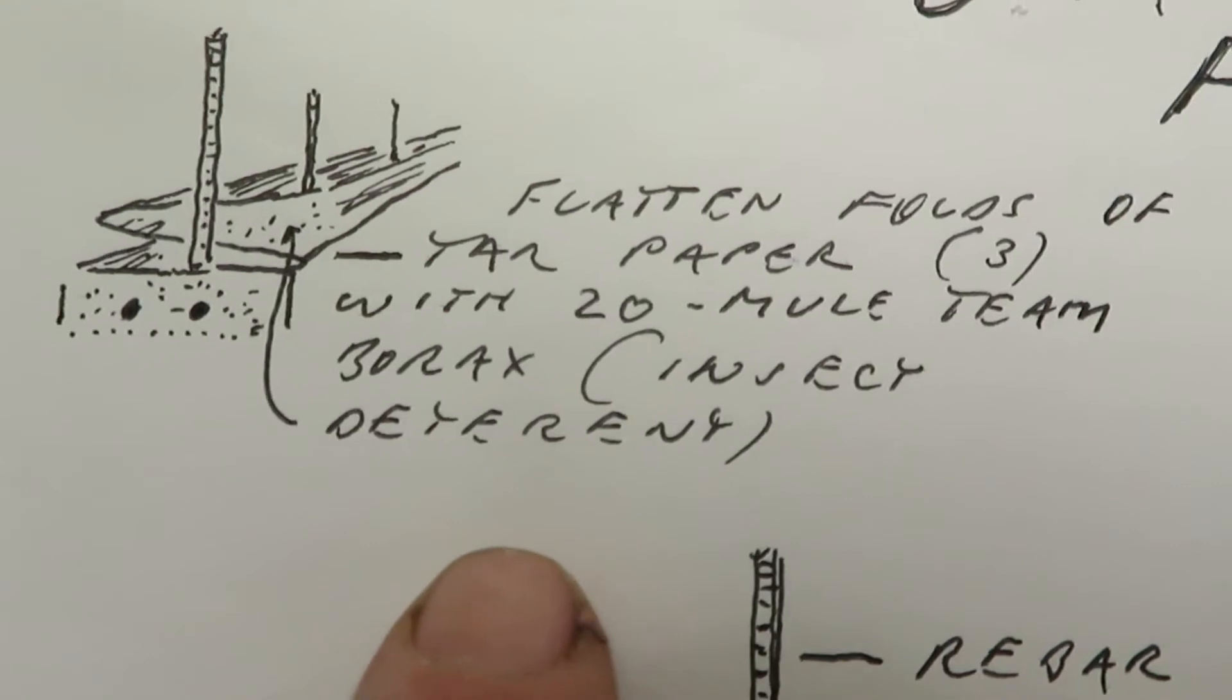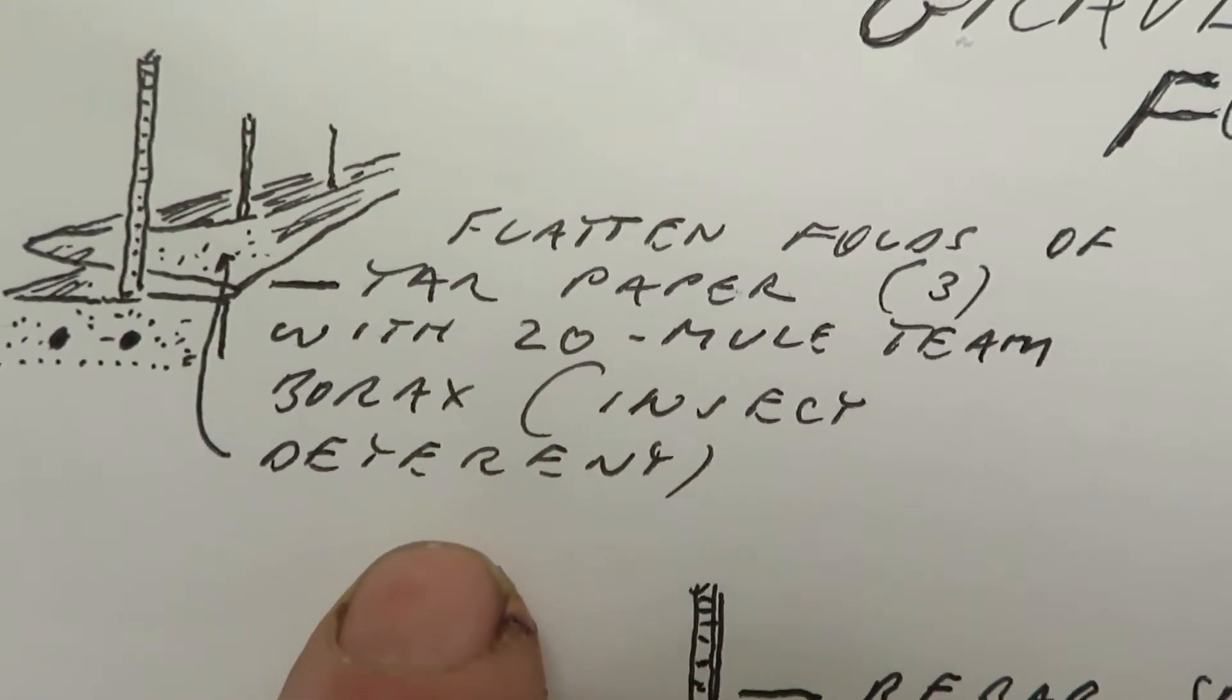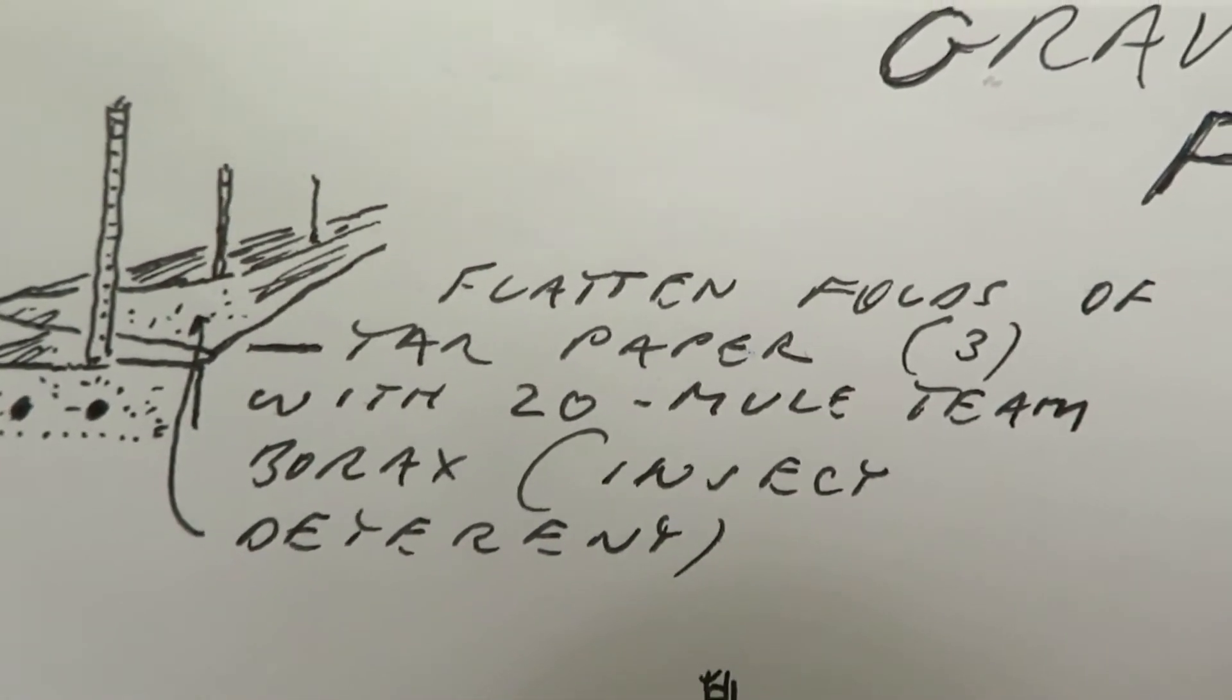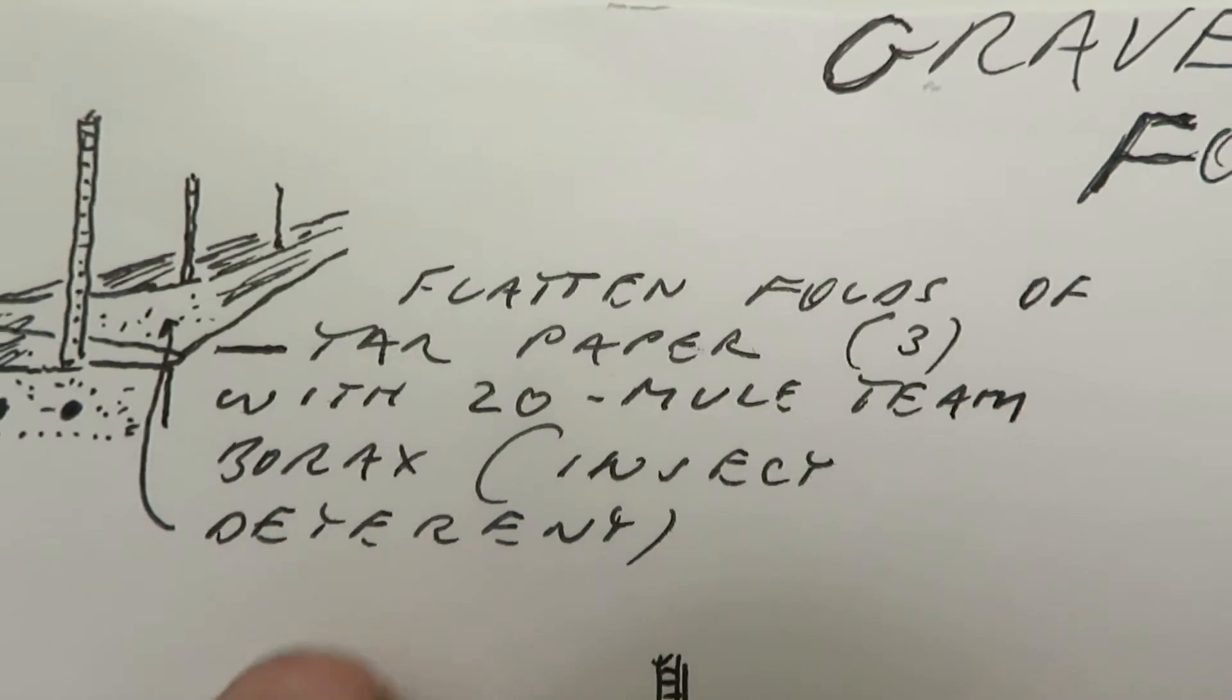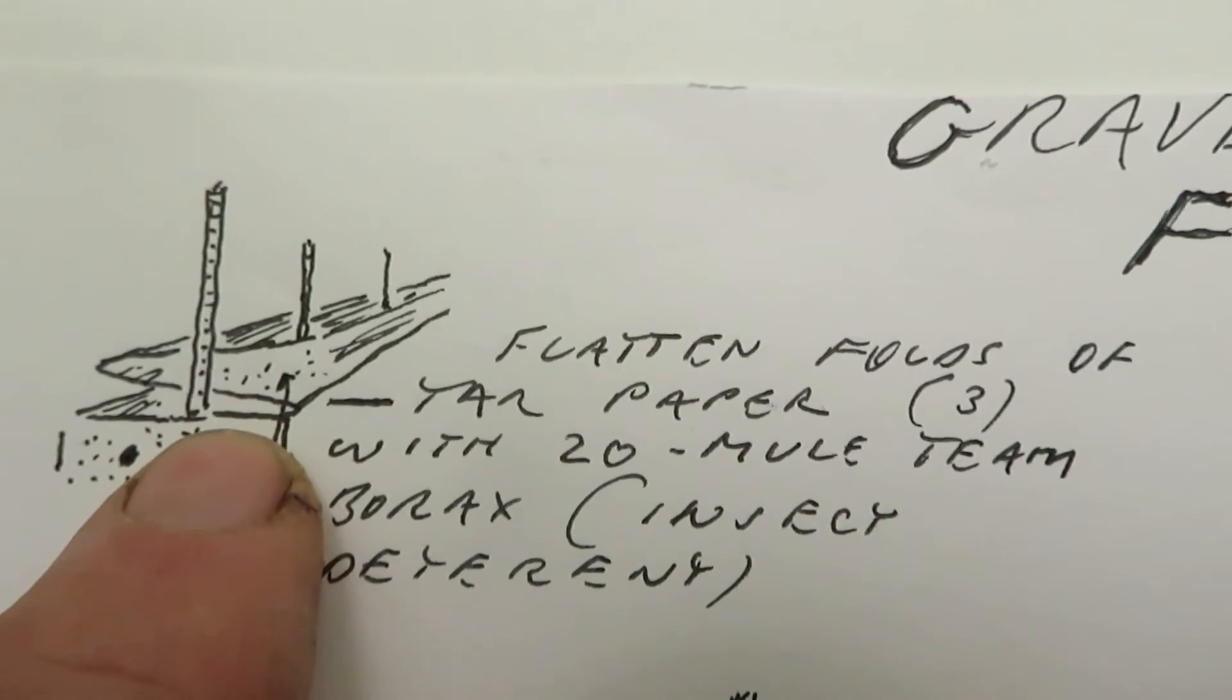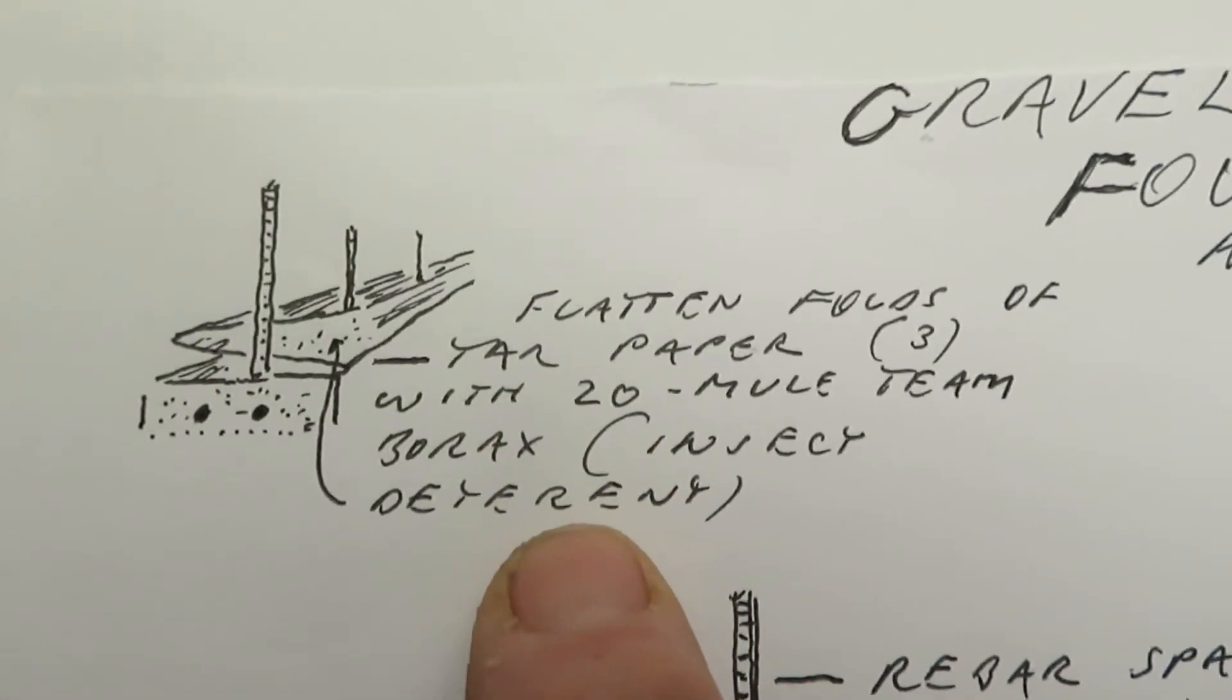Flattened folds of tar paper, three folds with 20 mule team borax insect deterrent inside. I think deterrent has two r's, right?